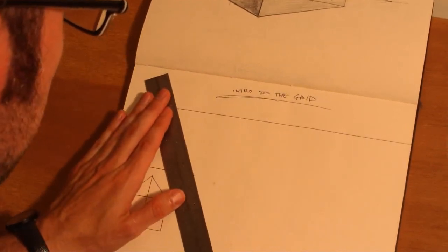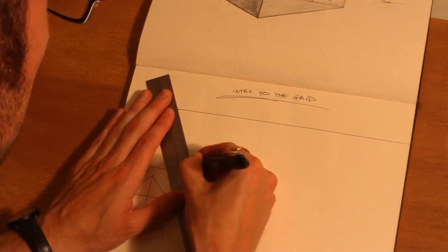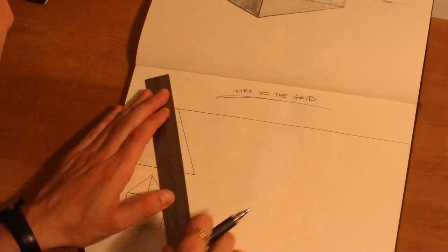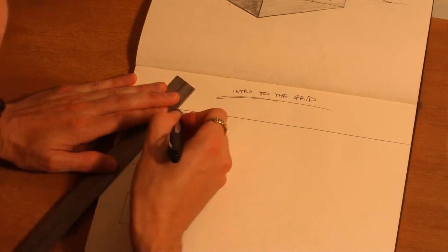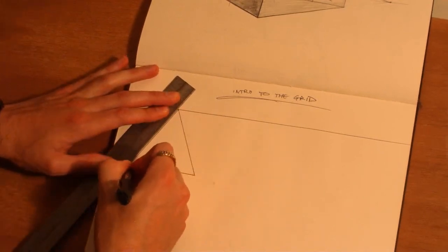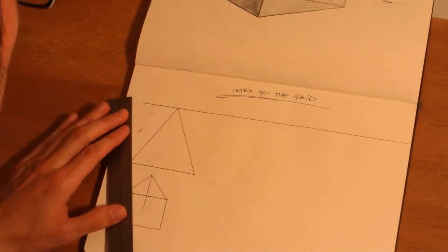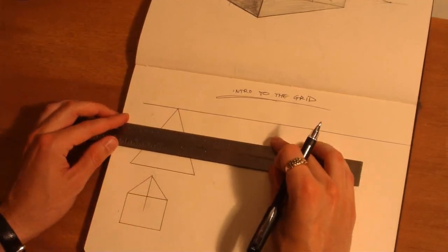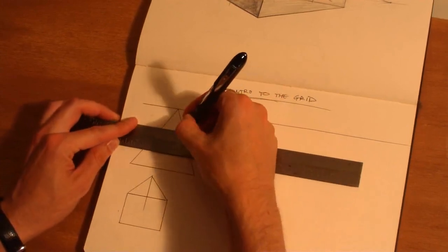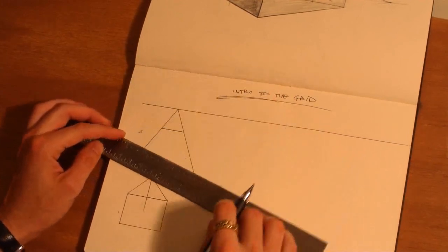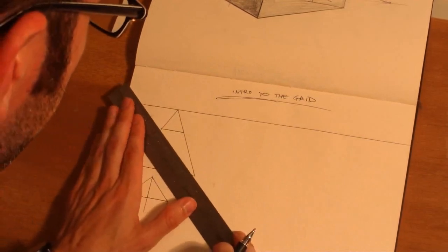Now, the grid's really useful because you can take any object that's in your head or any object that you see, basically draw its footprint with this grid and then project it upwards without even really having to look at it necessarily.